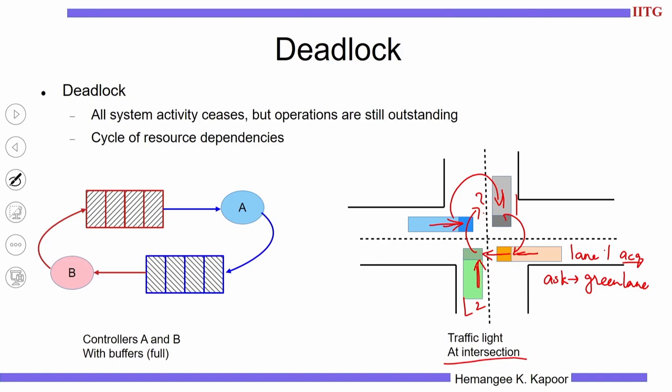In the hardware scenario, when discussing two controllers A and B, both holding certain resources and wanting more resources from the other: A says it wants a resource from B and only then will it accept requests, and B says the same. This creates a cyclic dependency between A and B because neither is willing to preemptively release their resource and accept the outstanding requests.